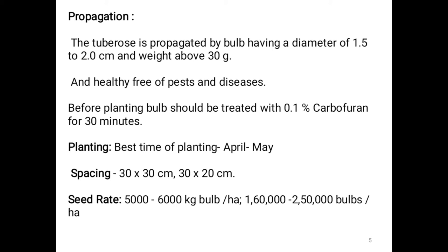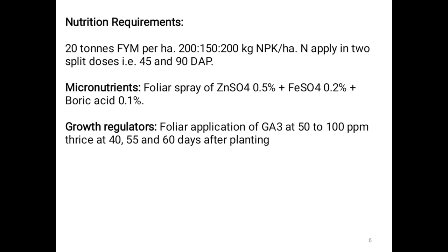Planting: The best time of planting tuberose is April to May. Spacing is 30×30 cm or 30×20 cm. Seed rate is 5,000 to 6,000 kg of bulbs per hectare, or 1,60,000 to 2,50,000 bulbs per hectare.